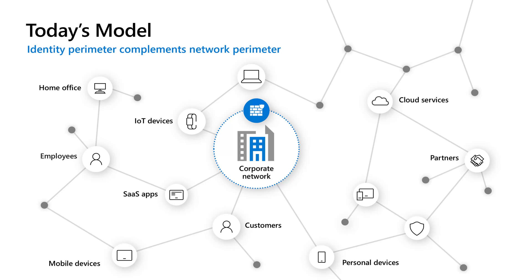We're no longer using desktops in a corporate office building. We're almost anywhere — home, coffee shops. We're using personal devices that aren't even managed by the IT department. We're using cloud services where IT may have no control over that data in the cloud service. And not only that, but our customers and even business partners are logging in to access that data. So this perimeter is no longer the data center or the corporate network — the perimeter is really everything else.